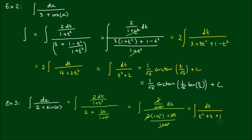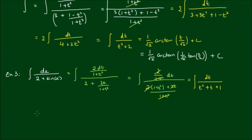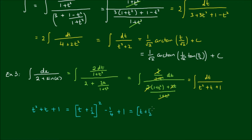The denominator t² + t + 1 is irreducible, so we can't factor it into two linear terms. We need to complete the square. Completing the square: t² + t + 1 = (t + 1/2)² - 1/4 + 1 = (t + 1/2)² + 3/4.